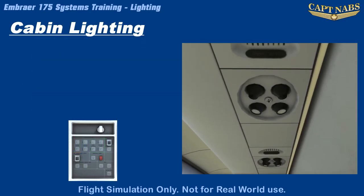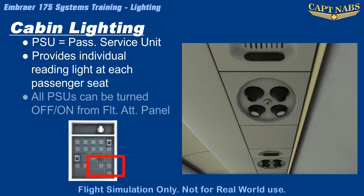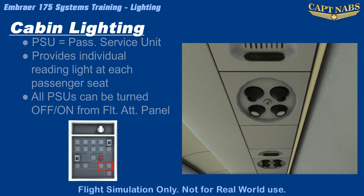Individually controlled lighting is also provided at each passenger seat in the form of an overhead passenger service unit, or PSU. Each PSU provides lighting as well as a controllable vent for each pair of seats, or single seat in the business class section. The light at each seat can be turned on or off on the overhead panel and is aimed at the passenger's lap to allow for reading or other activities. The overall function of the PSUs is controlled by flight attendants, and all units can be turned off or on using the flight attendant panel.